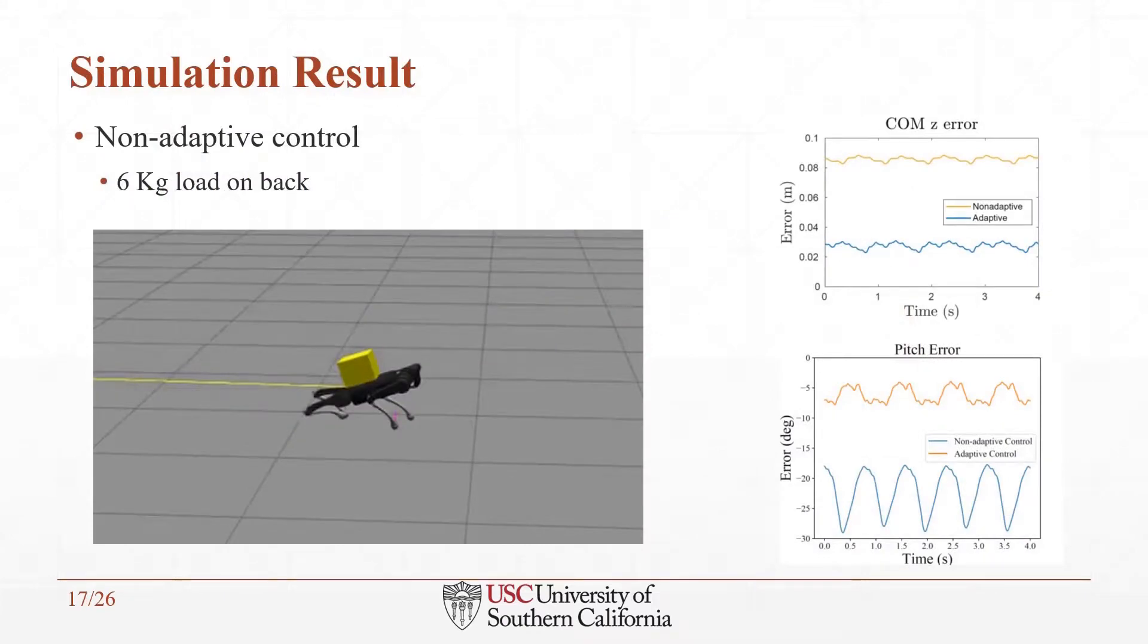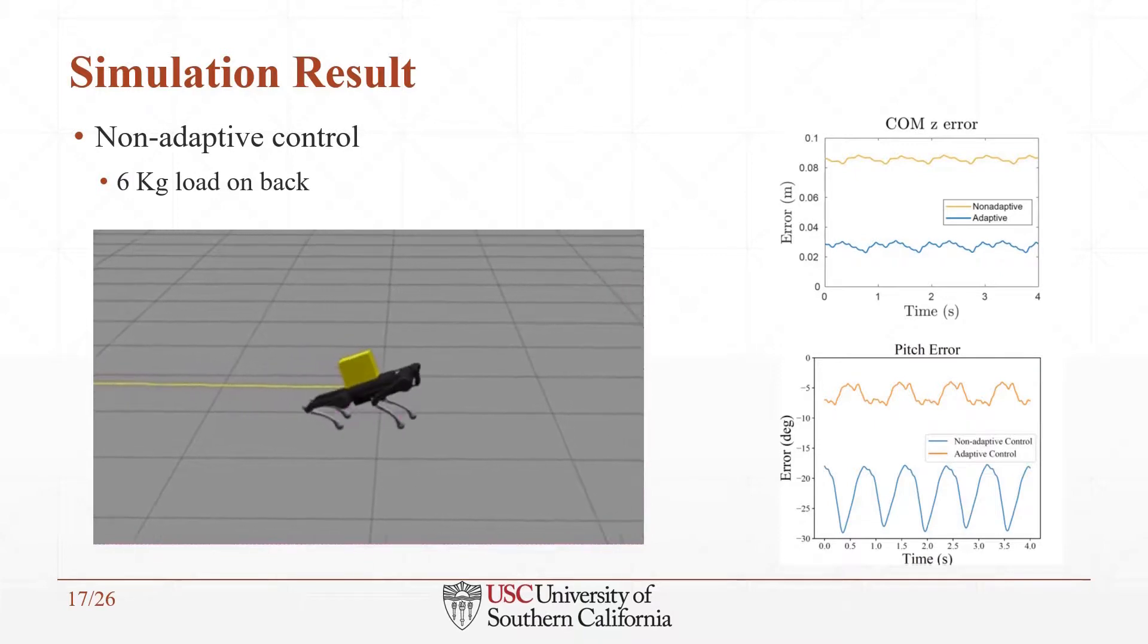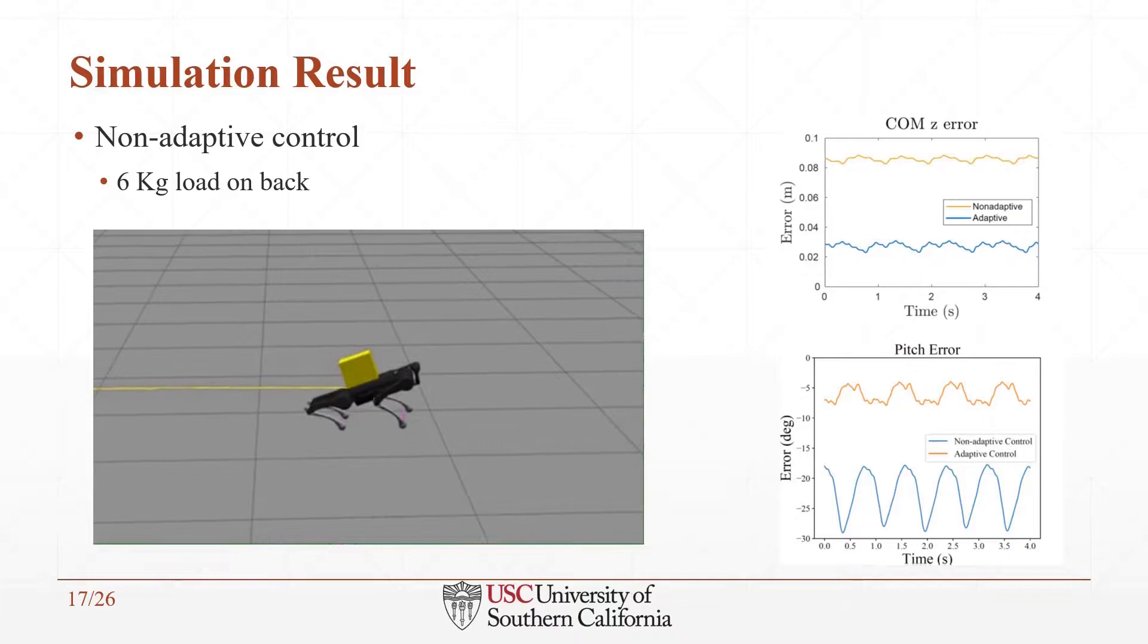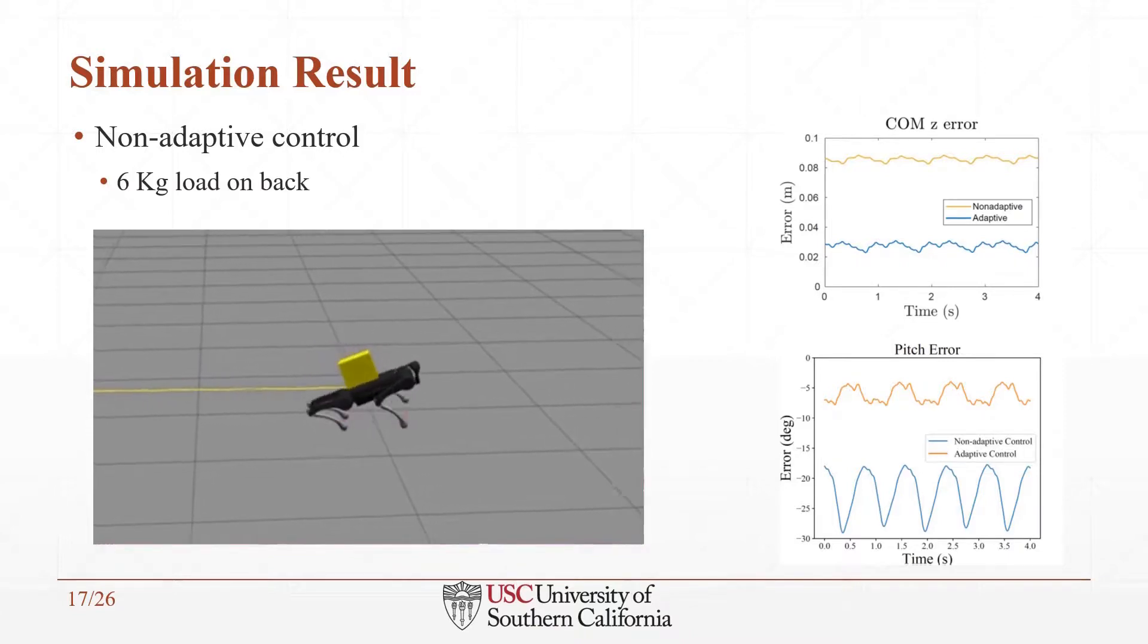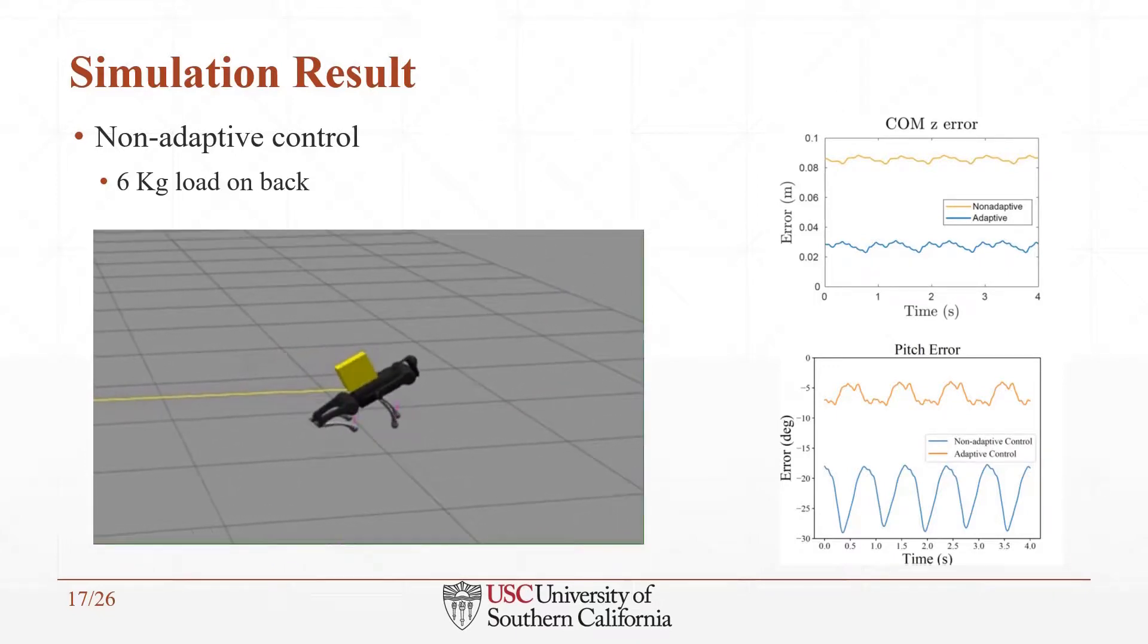In order to show the advantages of our work, we compare our proposed method results with the non-adaptive controller. From the simulation, it can be obtained that the pitch error is significantly large when we put a 6 kg load on the robot's backside. The plots show that the pitch angle has an average error of 25 degrees using the non-adaptive controller.